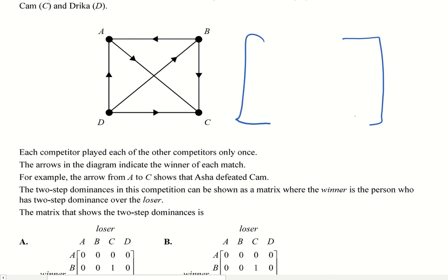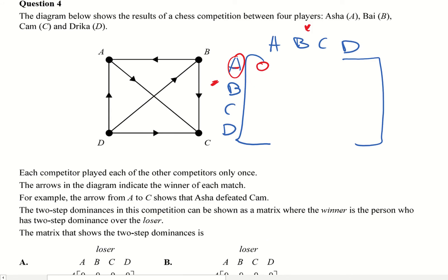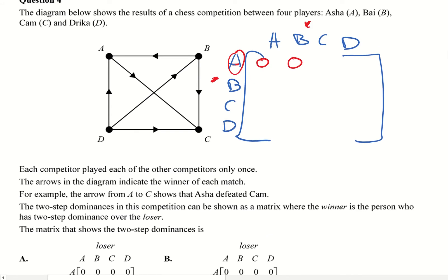So this one, we need to work out what our initial one-step dominance matrix is. So let's do that now, and then we can get the two-step dominance relatively easy after that. So let's put a matrix up here. I'm going to go A, B, C, D. I'll put this in a different color. So I'm going from here, I'm reading across to here. So I'm going to go Asher didn't beat Asher, so I'm going to put a zero. Asher did not beat Bae. Asher did beat Cam, so we put a one there. Asher did not beat Dryker, so that gives a zero.